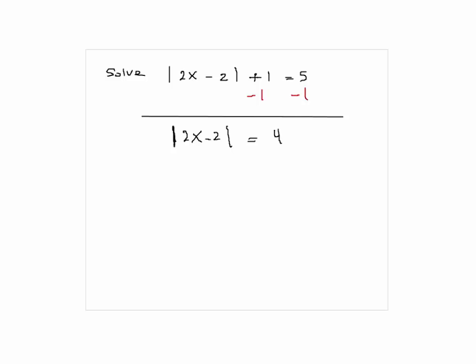Okay, at this point, if I have absolute value of X is equal to a number K, there are two cases that I have to examine. Either X is equal to K or X is equal to negative K. That's what you have to look at.